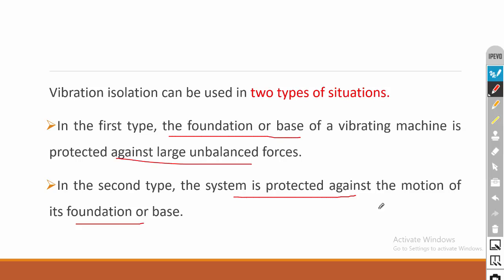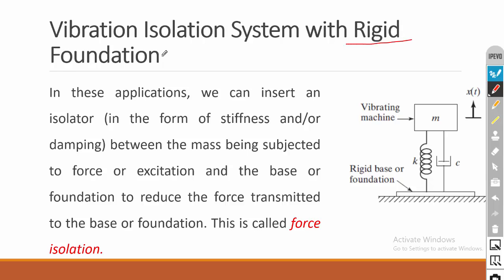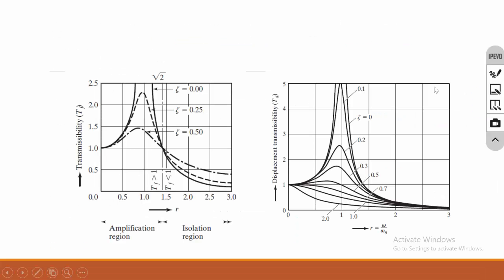These are the two situations where we can use a vibration isolator. In the first case the foundation is rigid and the system is vibrating — this is very common. The isolation used for engines or motors falls under this first category. In this case we can insert a spring and damper between the machine and the foundation, or use a rubber pad or cork material between them to isolate the vibration.